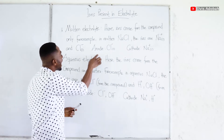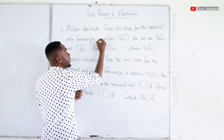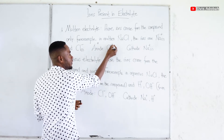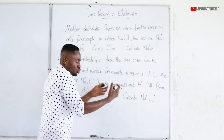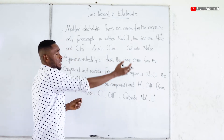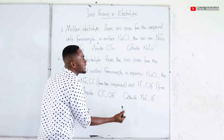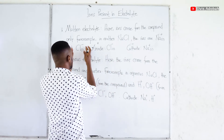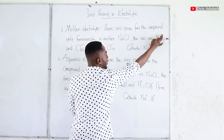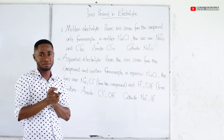Therefore, at the anode, which is positively charged, the chloride ions, which are negatively charged, are going to be attracted. At the cathode, which is negatively charged, the positively charged ions — in this case sodium ions — are going to be attracted.